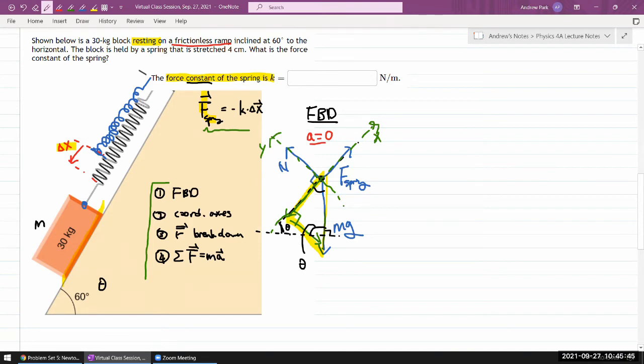Once I have that, I think I have enough information to write down the magnitudes of the components. This is the opposite side so it should be mg sine theta for the x component. This y component should be adjacent to the angle, so it should be mg cosine theta.